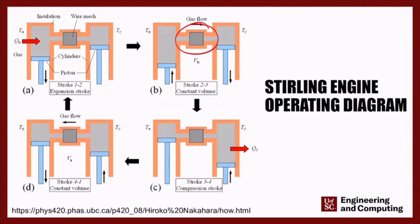If you think about what is happening in this cycle: the first step is a reversible isothermal expansion; the second step is an isochoric heat transfer; the third step is an isothermal reversible rejection of heat; and the final step is also an isochoric heat transfer as fluid moves between the two cylinders.